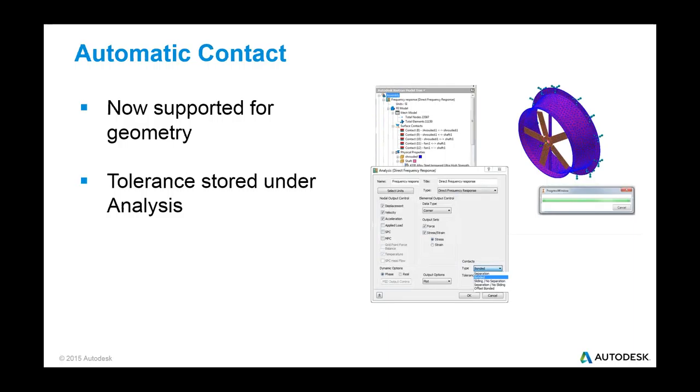So with Nastran, contact is used in all analysis types. So we supported automatic contact on the element bases created directly in the solver at runtime. So this was very robust. You had a lot of options in how to control that, but it didn't allow you to see the contact surfaces before the analysis was ran. So what we've done is we've created automatic contact where you can specify the type of contact that you want to use, the tolerance that you want to search. It's stored under the analysis settings. And then when you click generate contact, it will go and find all those for you. So again, you can adjust that in the analysis settings if you want.